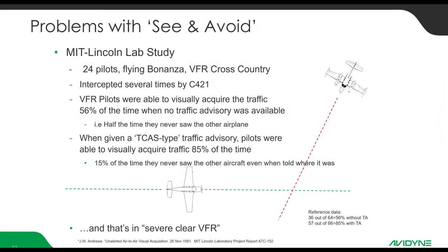Here's an MIT Lincoln Lab study where they took 24 pilots flying in a Bonanza on different sorties flying VFR cross-country. They were intercepted by a Cessna 421 multiple times during each flight — in VFR conditions. The VFR pilots were able to visually acquire the traffic 56% of the time when no traffic advisory was available. So half the time, they never even saw the other airplane. When they were given a traffic advisory such as 'traffic, 11 o'clock, one mile,' the pilots were able to visually acquire the intruder aircraft 85% of the time — pretty good.